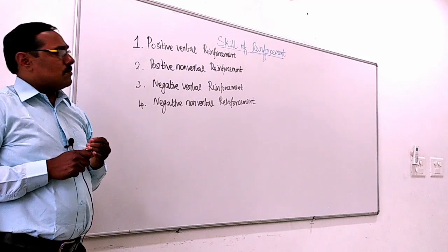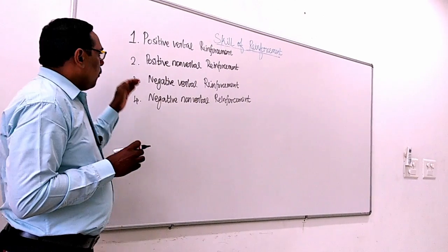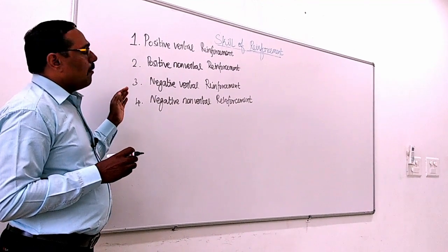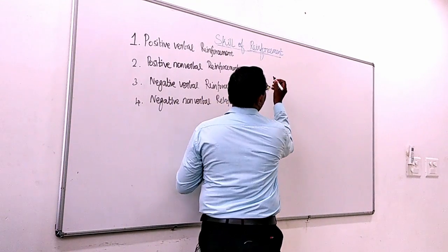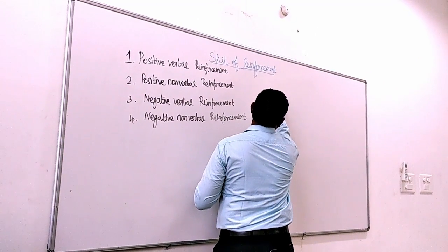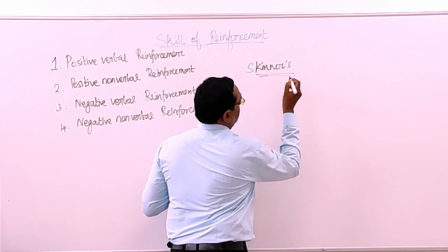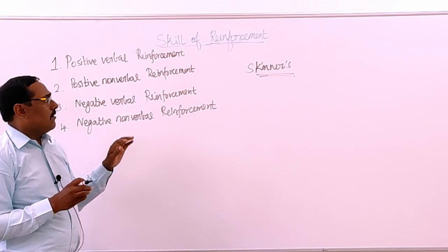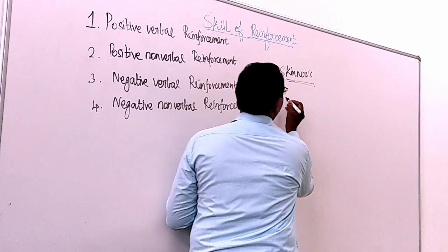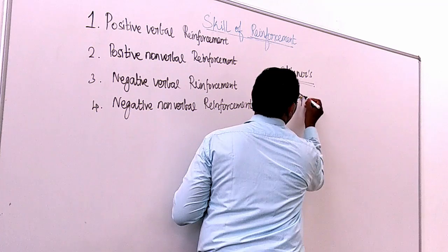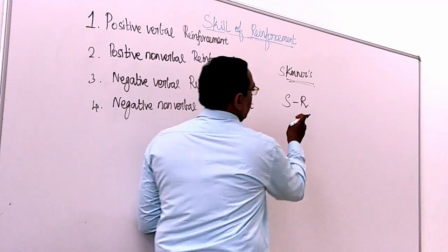Reinforcement consists of four sub-components. Instead of going through the components directly, let me tell you about some theory first, after which we will come back to the components. The theory is Skinner's theory of learning, which comes under SR theory — where S is called stimulus and R is response.